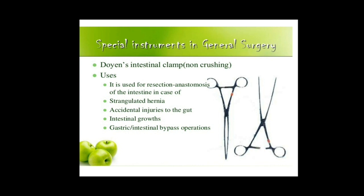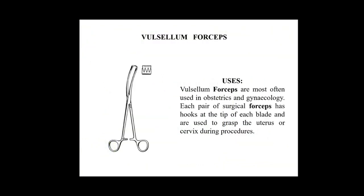The Doyen intestinal clamp is used for resection and anastomosis of the intestine in cases of strangulated hernia, accidentally injured intestine, or gastric intestinal bypass operations. This is specially made for gastrointestinal surgeries and is a non-crushing intestinal clamp. The next one is Valsellum forceps, mostly used in obstetrics and gynecology procedures.